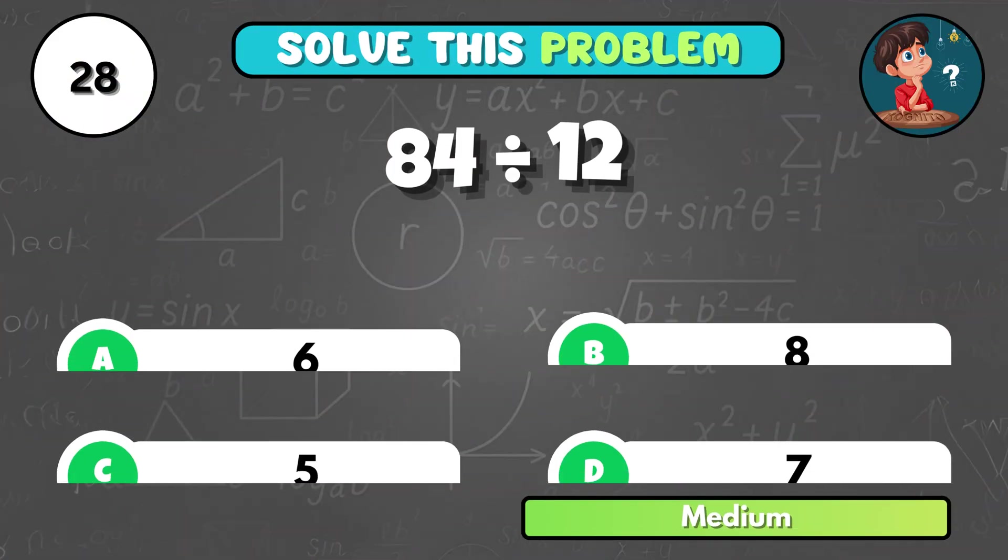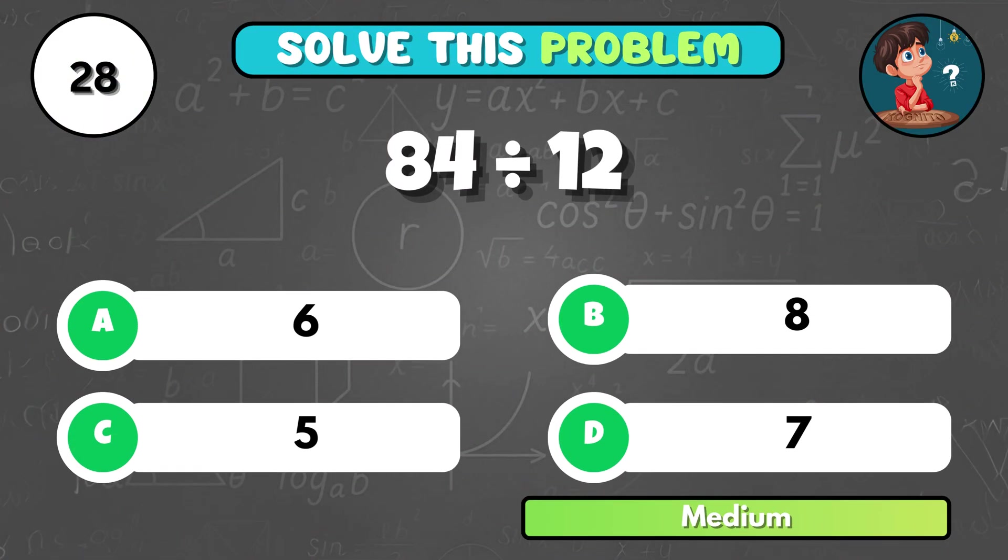What number do you get when 84 is divided by 12? That's D, 7.